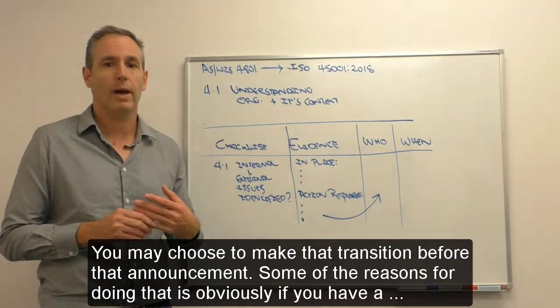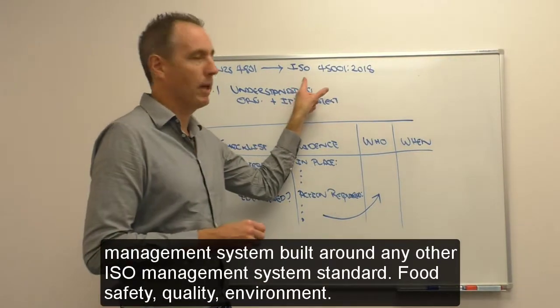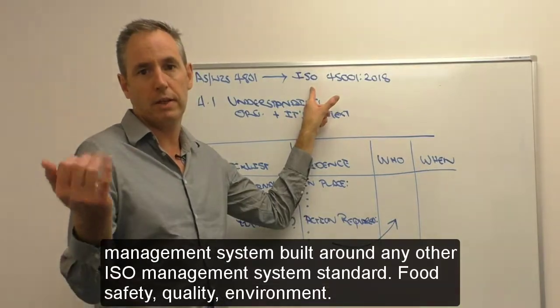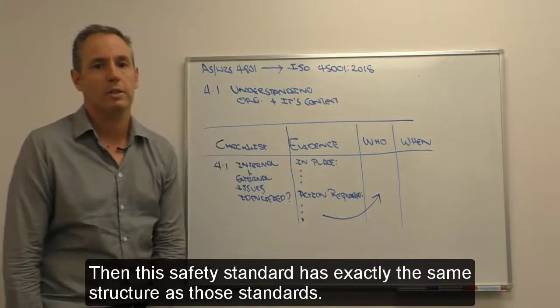Some of the reasons for doing that is if you have a management system built around any other ISO management system standards—food safety, quality, environment—then this safety standard has exactly the same structure as those standards.